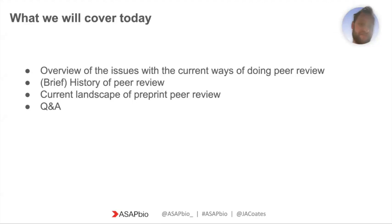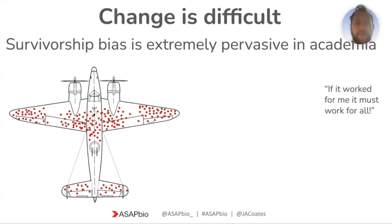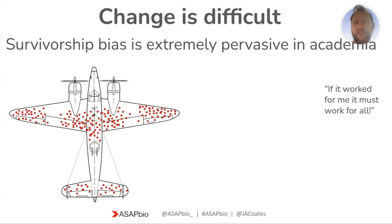Preprints are a really good mechanism for change in academia, but change is very, very difficult. There are a whole bunch of reasons for this, but in academia above a lot of other situations where you want to bring about change, survivorship bias is a huge problem.